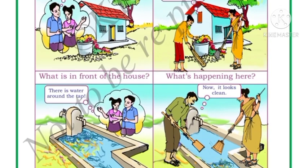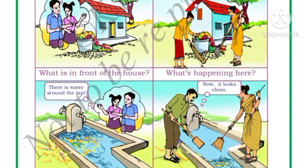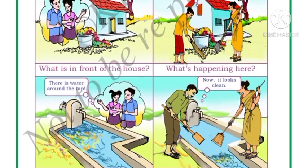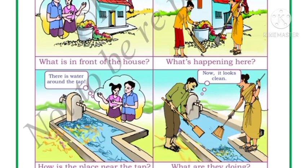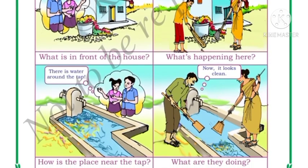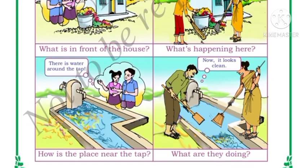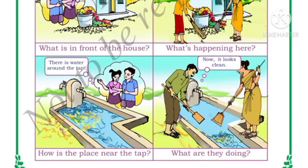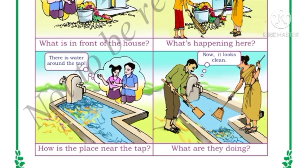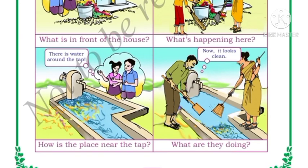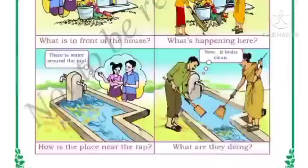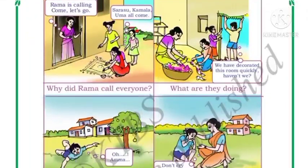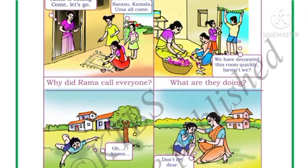In the third picture, how is the place near the tap? The place near the tap is very dirty — there is water around the tap. In the fourth picture you can see two members are cleaning the area near the tap.